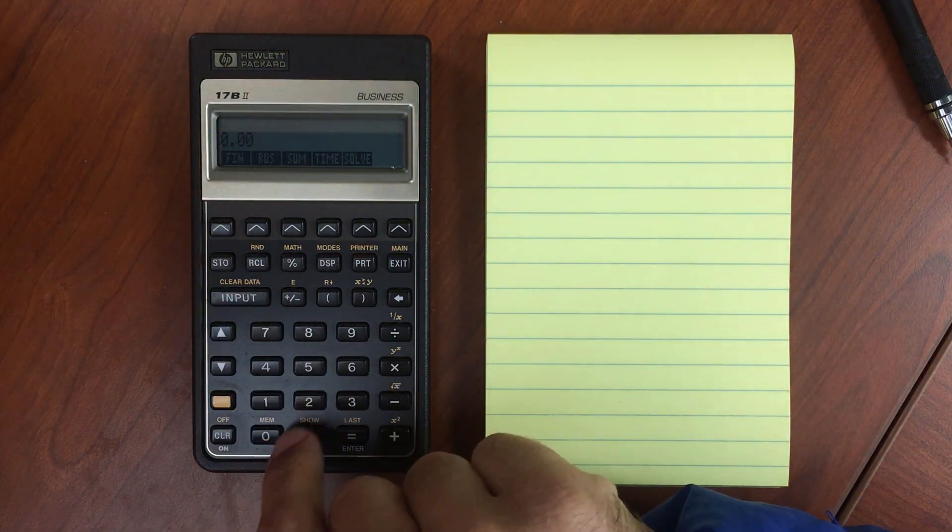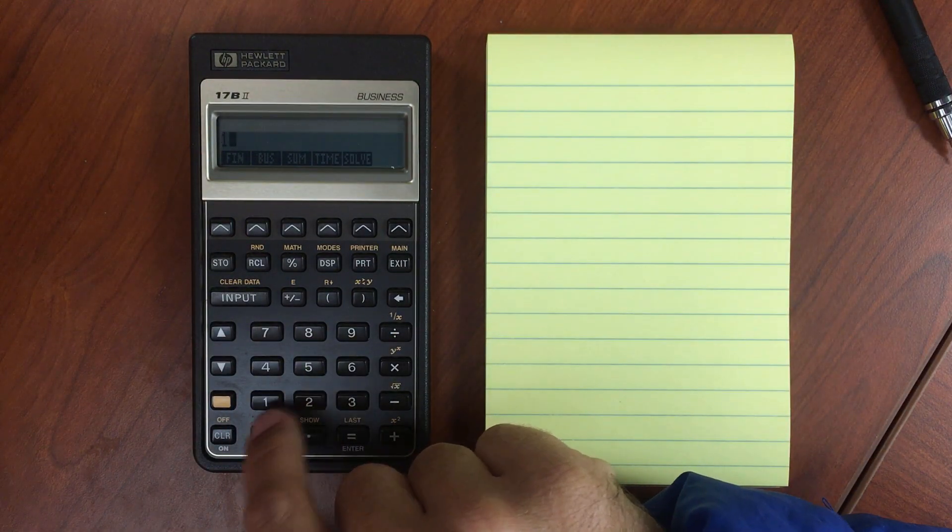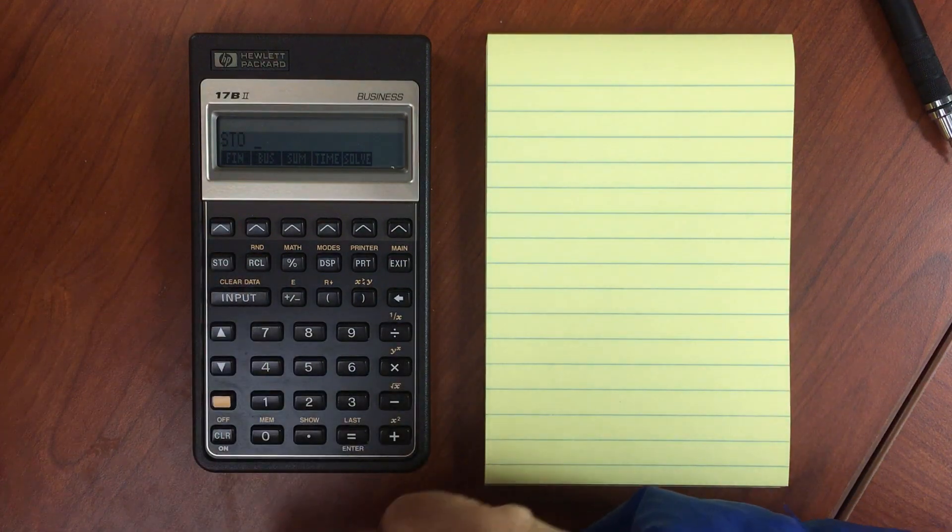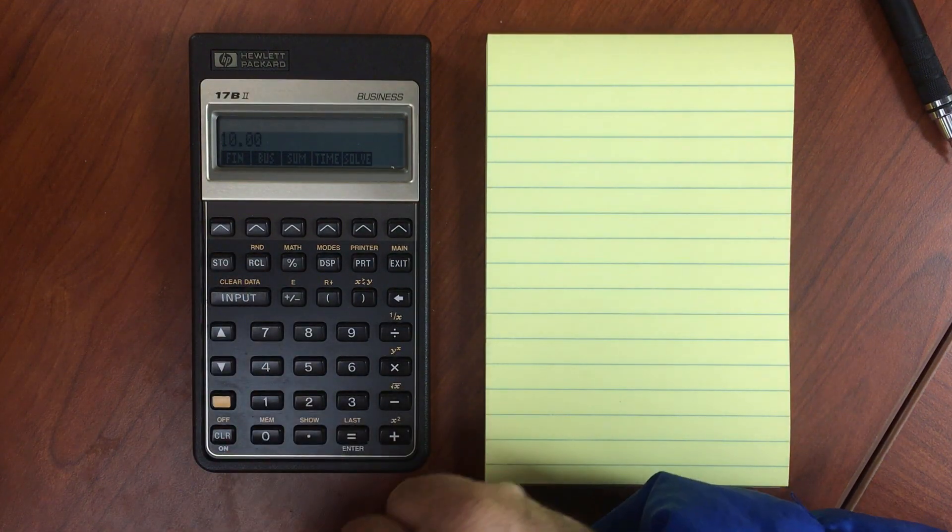So you have all the registers. Let's say I have the number 10, and I want to store that. It asks me which register I want to store it into. So let's store it into register 1.